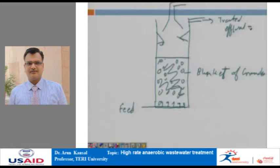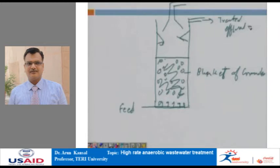UASB technology is being used extensively for a large number of different industrial effluents. The system uses granules as a means of achieving high mean cell residence time or SRT, thereby achieving highly cost-effective designs. UASB processes have found applications in treatment of high, medium, and low strength wastewaters, and have been applied to industries such as distilleries, food processing units, and tanneries. Under the Ganga Action Plan, UASB reactors have been installed at many sewage treatment plants.